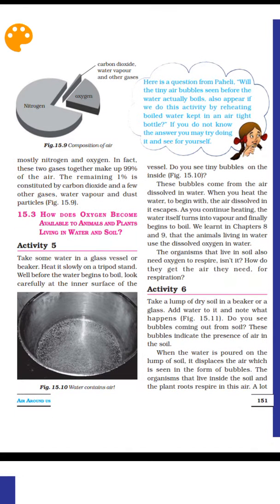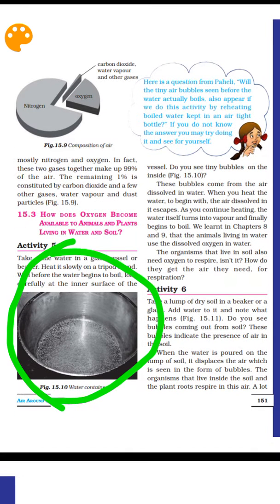Start with clean water. The water will boil and pour out into bubbles. When you see bubbles, that means there is air in the water. The bubbles come out because oxygen escapes when heat is applied to the water. So the bubbles show that dissolved air exists in water.